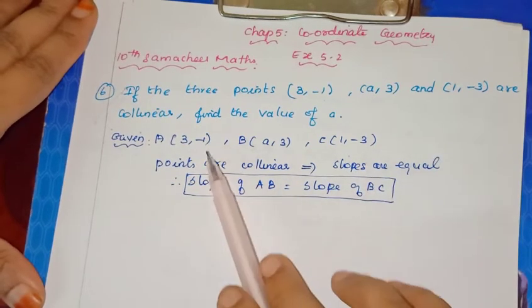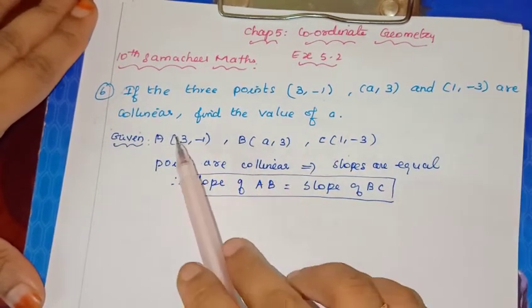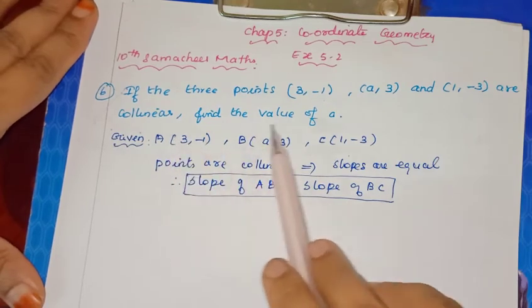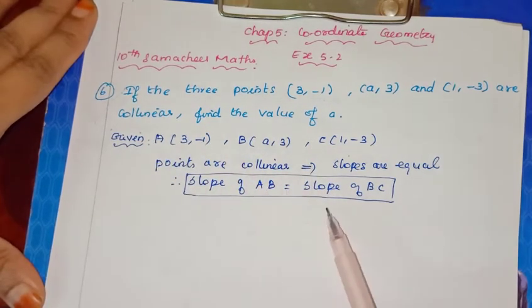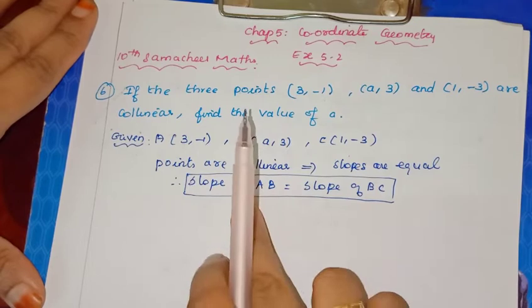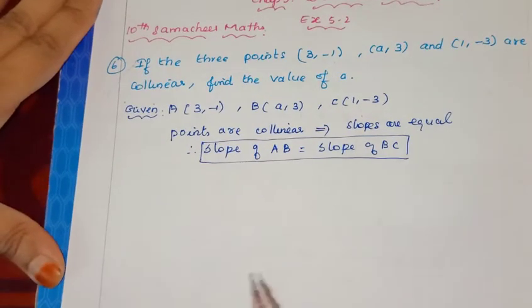So slope of AB will be equal to slope of BC. Otherwise, slope of AB will be equal to slope of AC. Any slope combination will be equal. In this problem, we will use slope of AB equal to slope of BC.